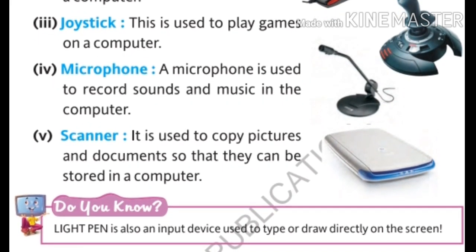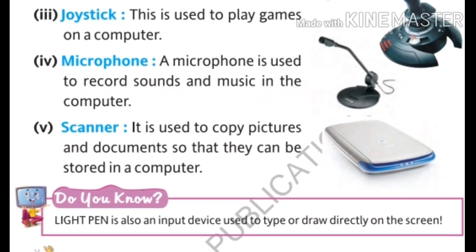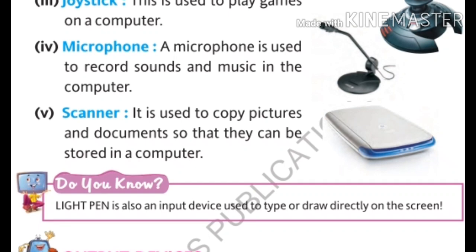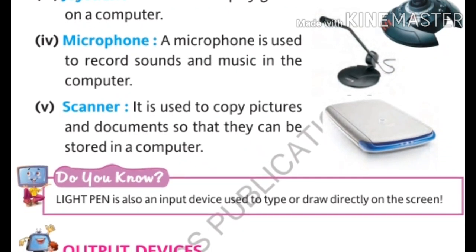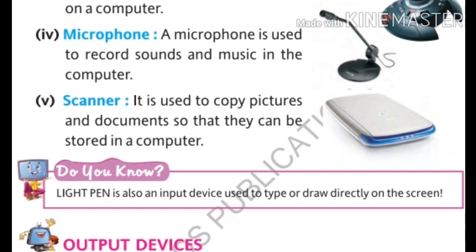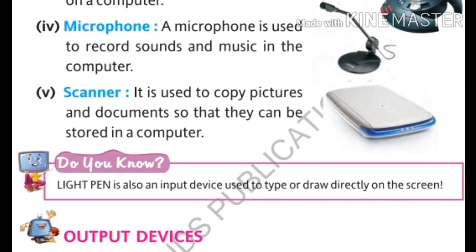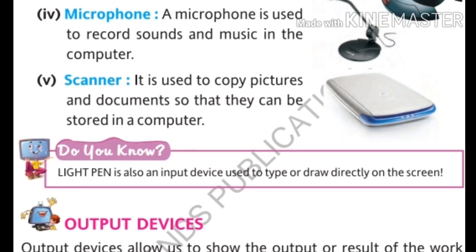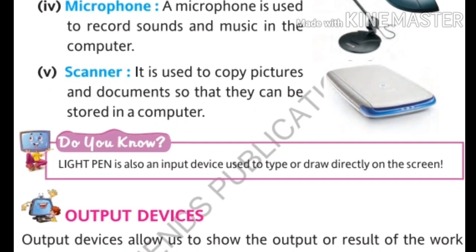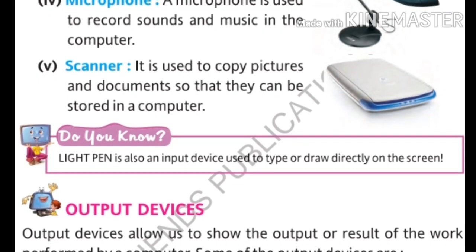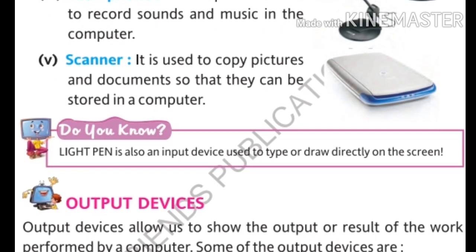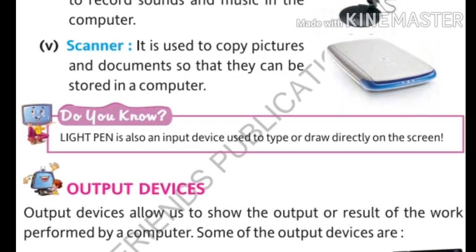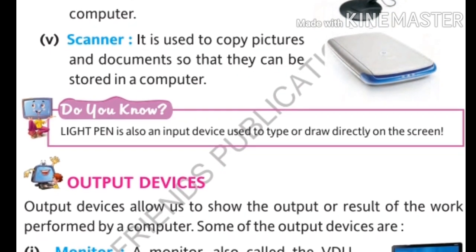Next is the microphone. A microphone is used to record sounds and music in the computer. If you want to record your voice in the computer, you need a microphone. The next input device is the scanner. A scanner is used to copy pictures and documents so that they can be stored in a computer. If you have a photo on paper and want it on your computer, you use a scanner to copy that picture into the computer.